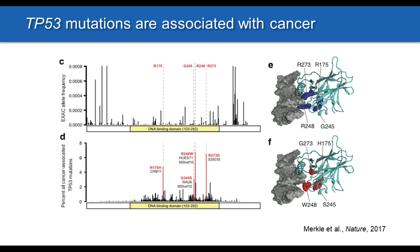The reason these codons are commonly mutated in human cancer is that the amino acids they encode play a critical role in P53's association with DNA, and they act as dominant negatives — in the heterozygous state, this leads to a dramatic loss in P53 activity. The mosaic nature of these variants allowed us to perform natural competition experiments to ask whether these mutations confer a growth advantage. This is an ideal isogenic comparison: exactly the same cell line, with only a subset carrying the mutation.